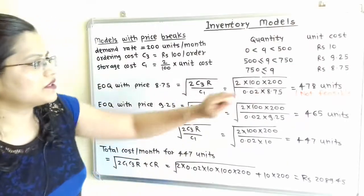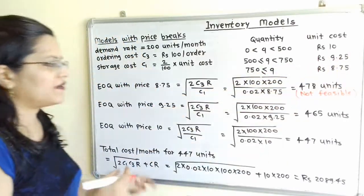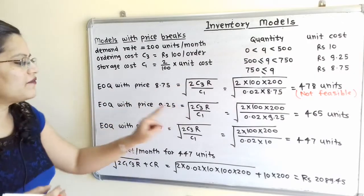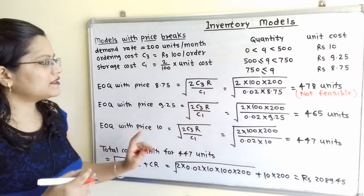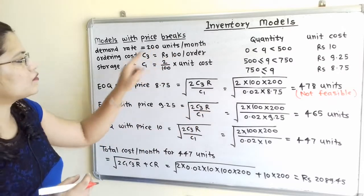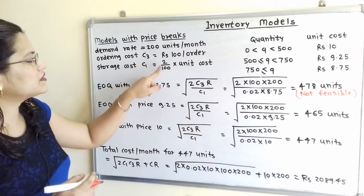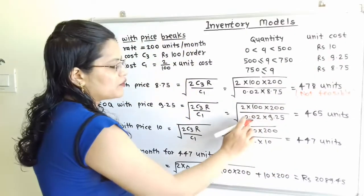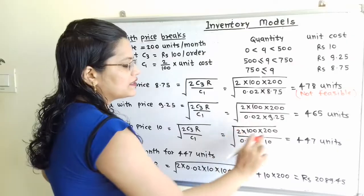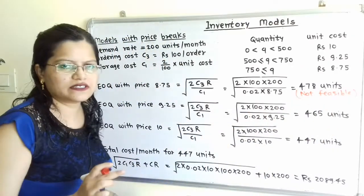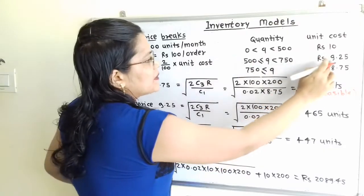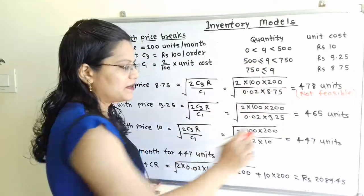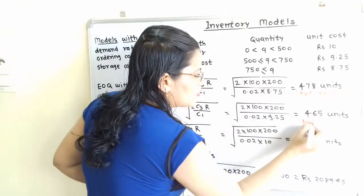Since Rs.8.75 is not feasible, we move to the next price, Rs.9.25. EOQ at Rs.9.25: applying the same formula √(2C3R / C1), with C3 = 100, R = 200, and C1 = 0.02 × 9.25, gives 465 units. This price is applicable for quantity 500 or greater, but 465 < 500, so this is also not feasible.